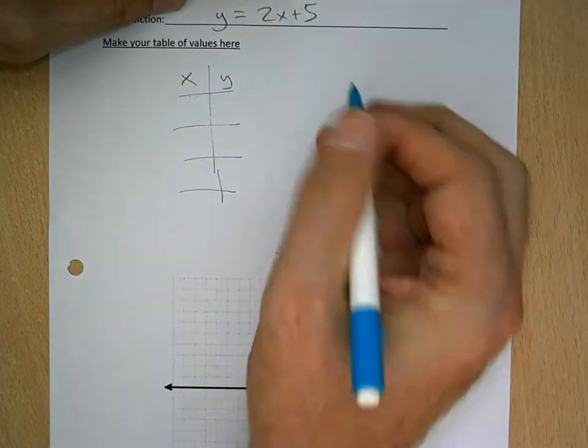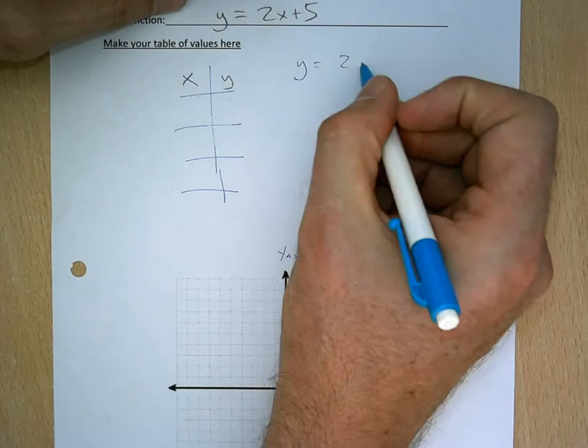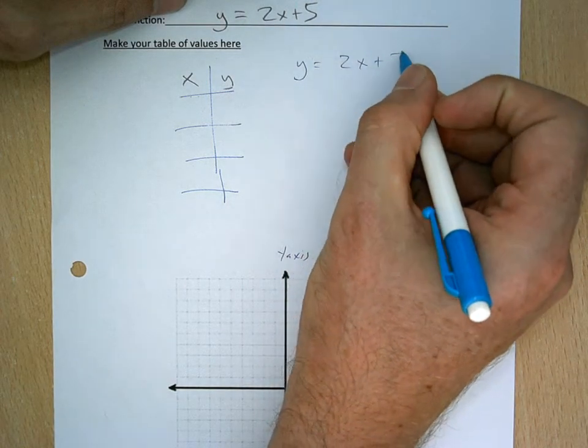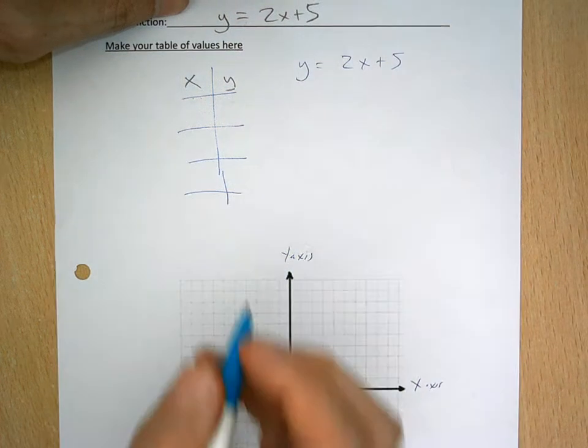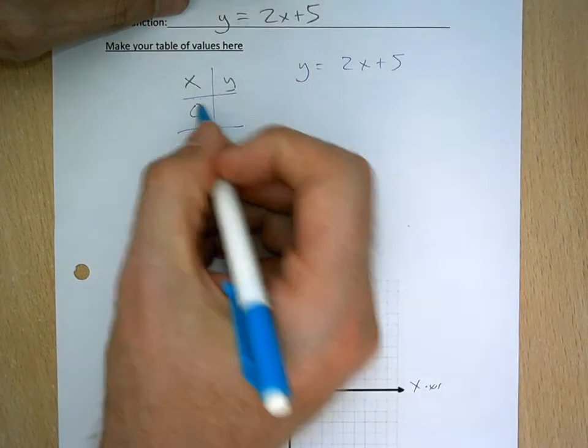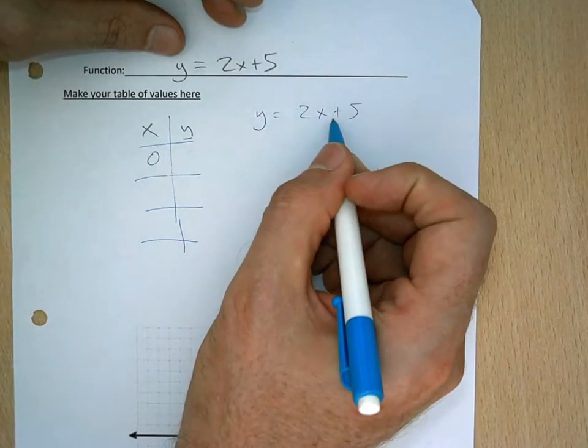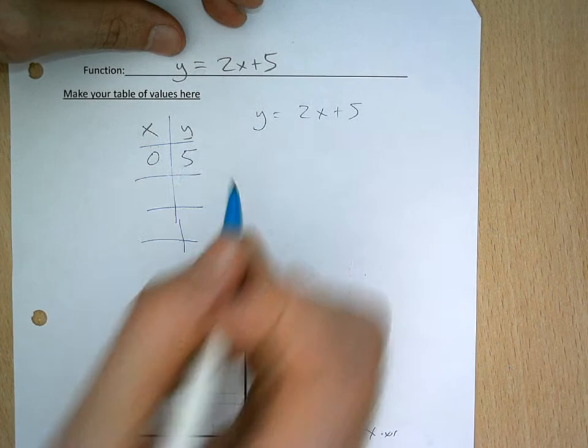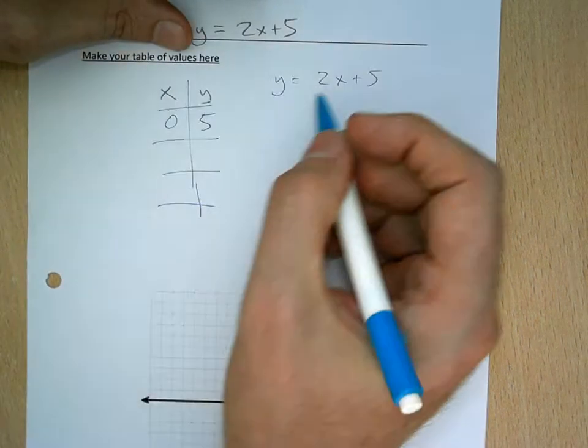I'm going to substitute some numbers in for this function, and I'm going to create a table of ordered pairs. So the coordinates, if I put in, for example, 0 for x, well, 2 times 0 is 0, plus 5, y ends up being 5.